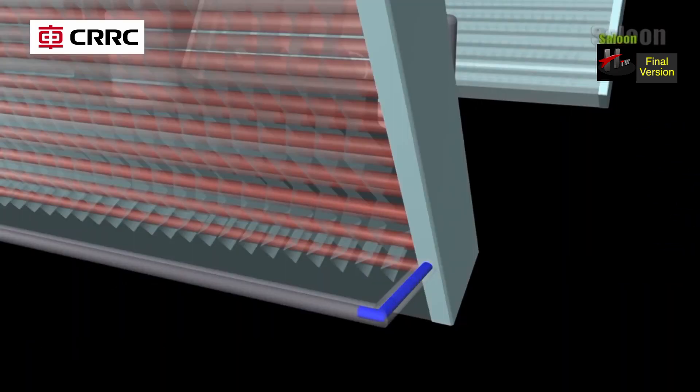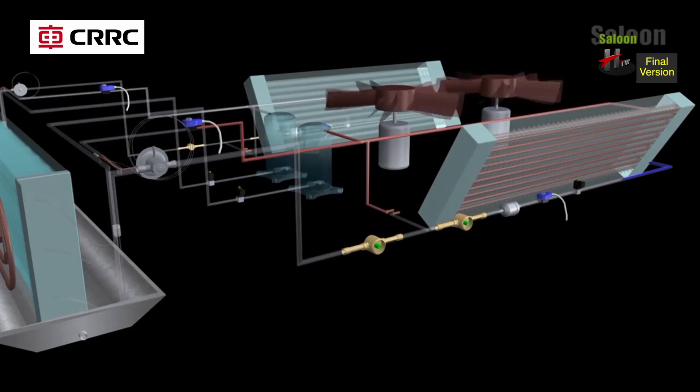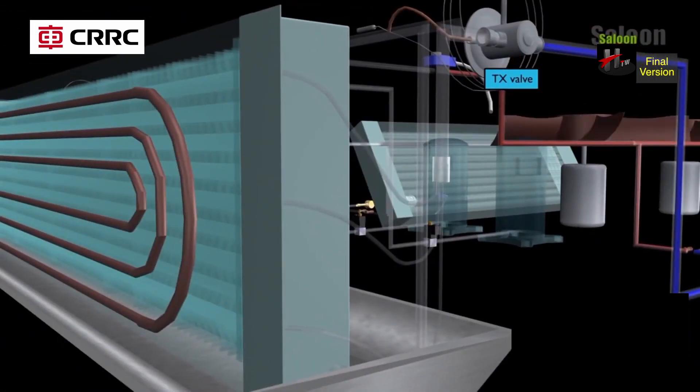This high pressure, high temperature liquid refrigerant leaves the condenser coils and passes through the expansion valve. In the expansion valve, the high temperature, high pressure liquid refrigerant coming from the condenser coils will expand.